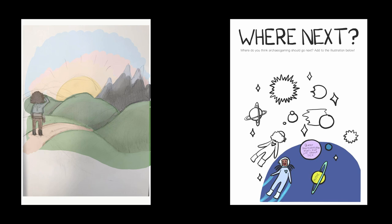We had a few stumbling blocks. We had an idea for a page about where archeogaming should go next — a landscape showing someone journeying, with spaces for people to fill in. We tried a standard fantasy landscape, but it didn't work artistically and also felt wrong conceptually: the mountain trope implies one dramatic destination, whereas archeogaming shouldn't work that way — people should feel free to explore whatever areas they think are important. So we came up with the idea of space: you can go in any direction. These are our ideas about directions archeogaming can go, and the reader fills in other planets where they think it could go. It's also a colouring book page, making it interactive.